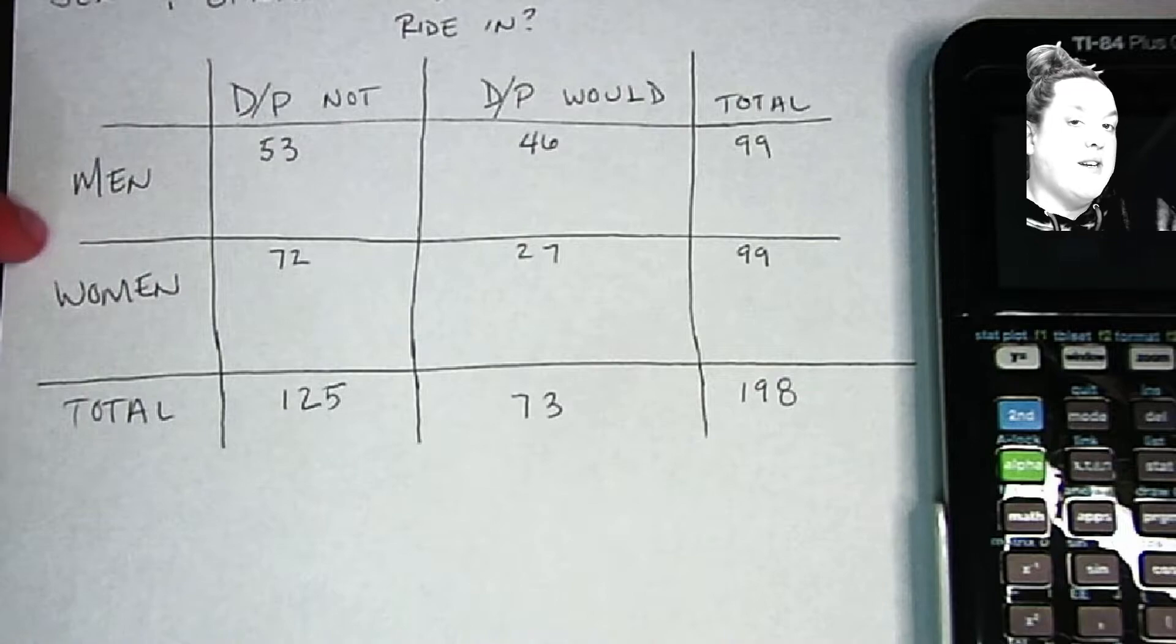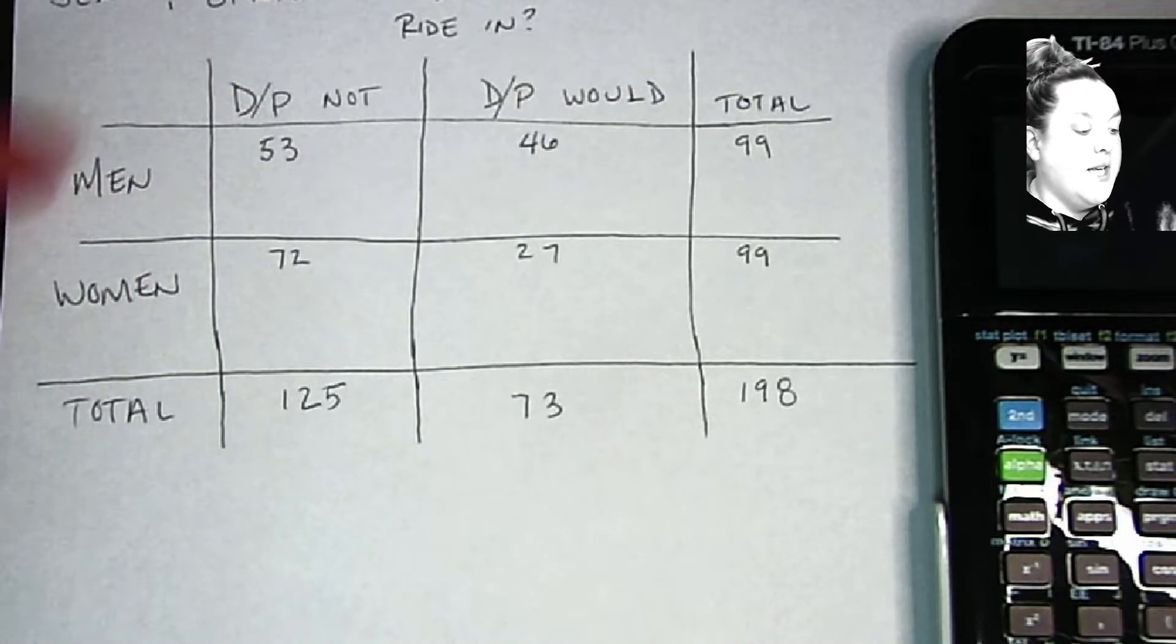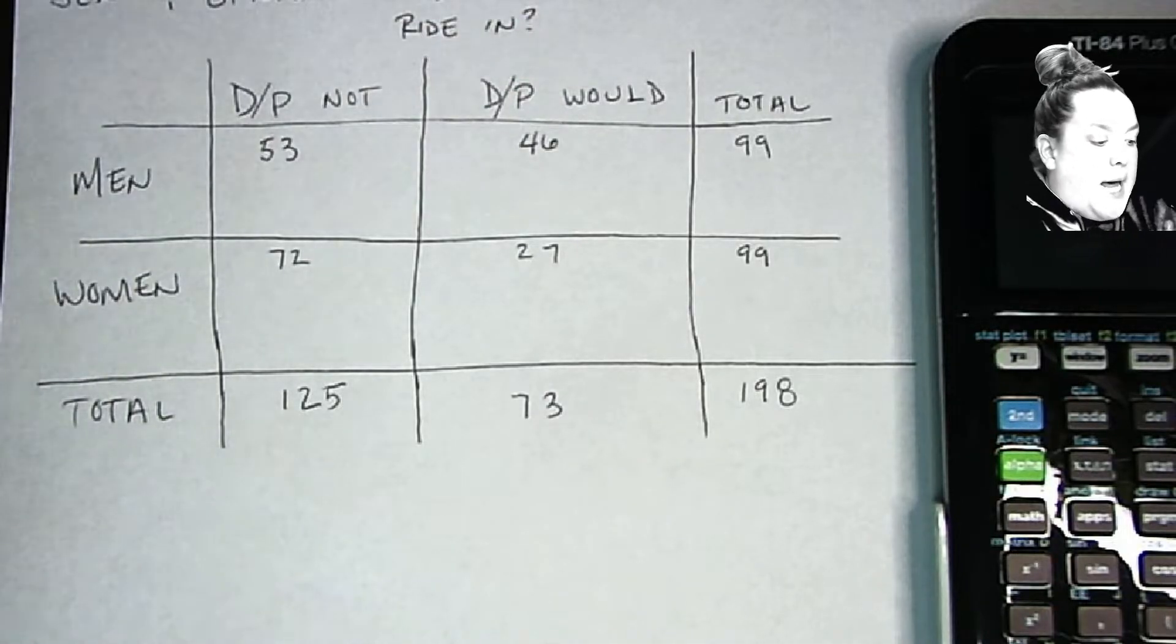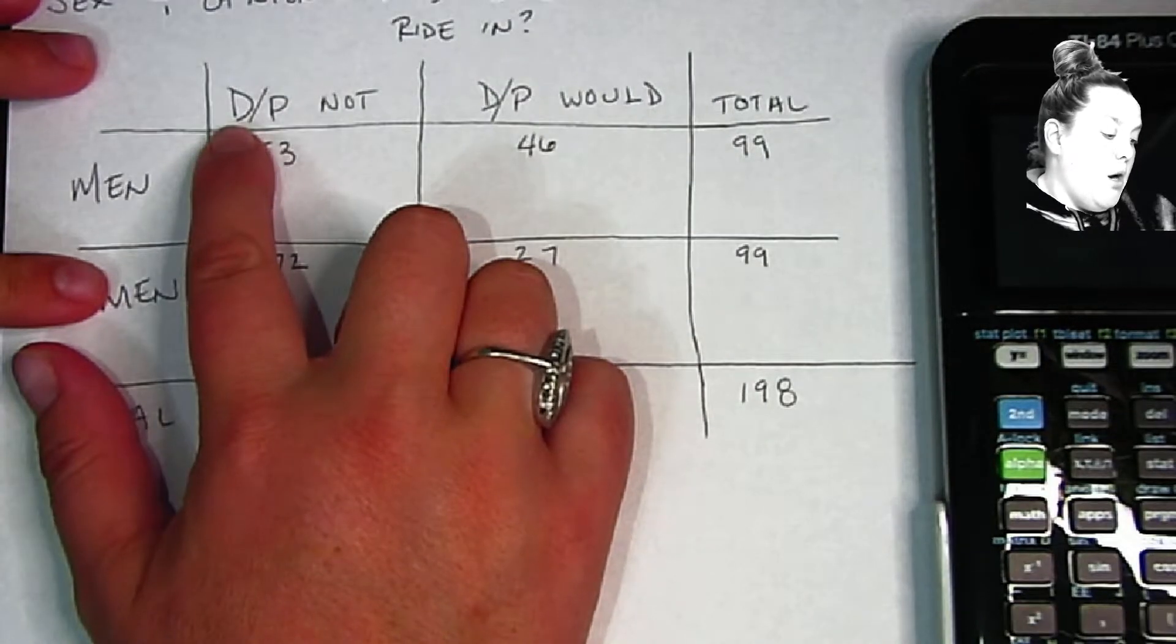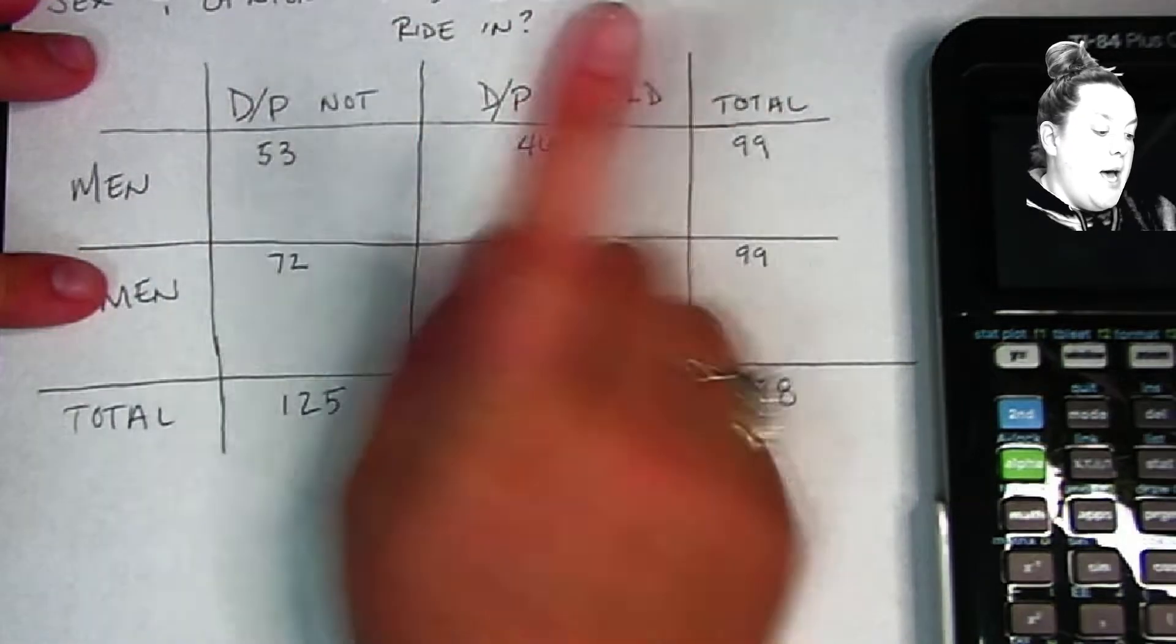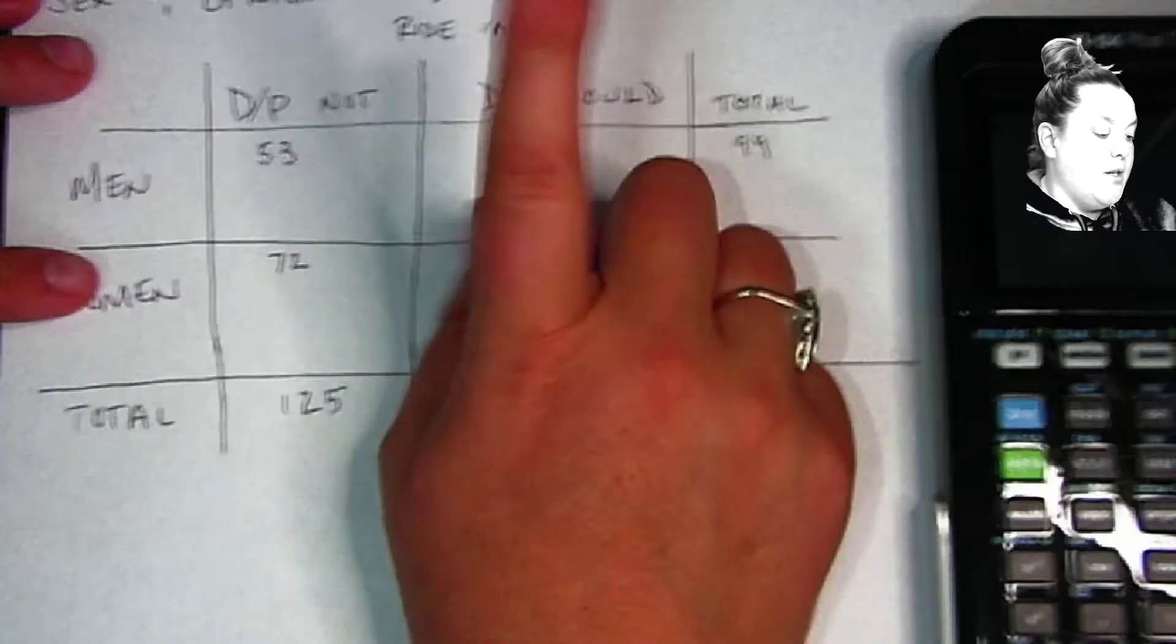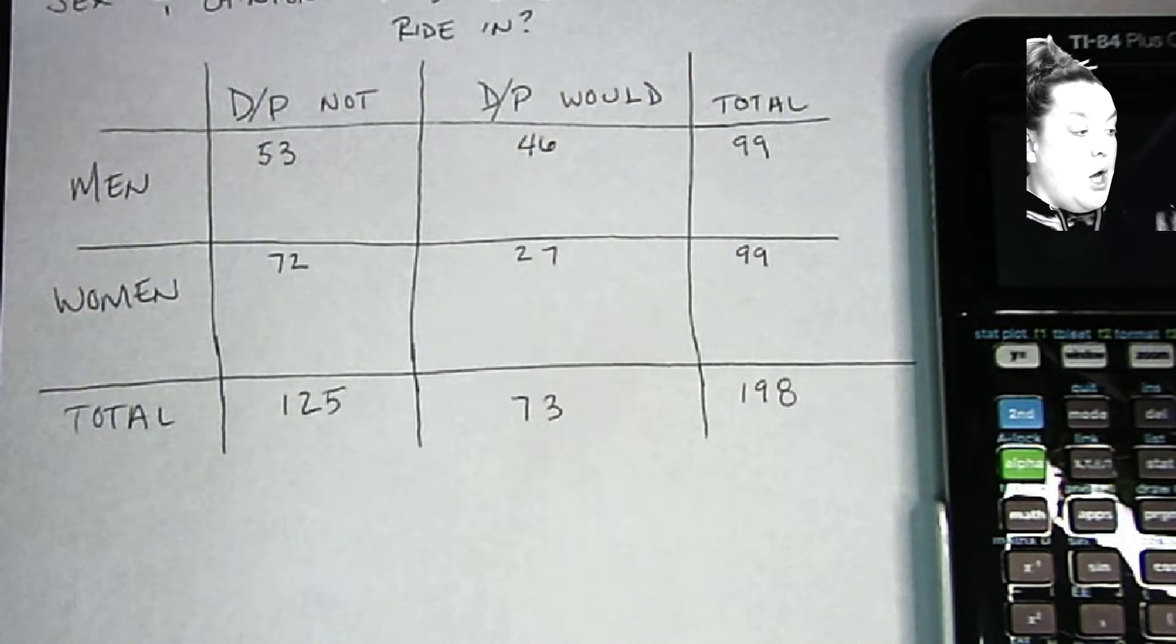We would expect that an individual's sex would predict or have an effect on whether or not they're comfortable riding in a driverless passenger vehicle. So these terms up here are definitely would not or probably would not, and then definitely would and probably would. I combined those, so we're going to start by calculating a joint distribution.